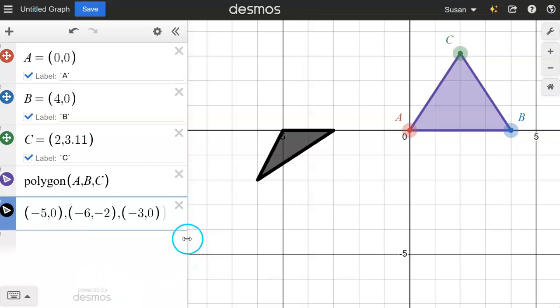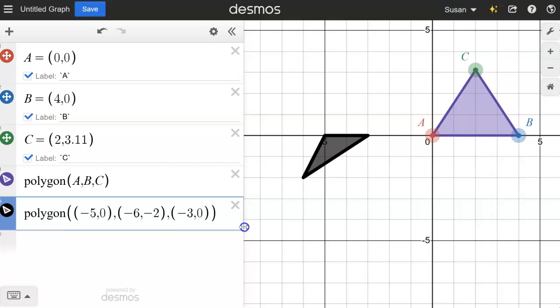All right, and so now I'm going to move this over so you can see what I typed. So I have polygon, open parentheses, and inside I have the three ordered pairs separated by commas. So that is a static polygon. I can't really move that around.